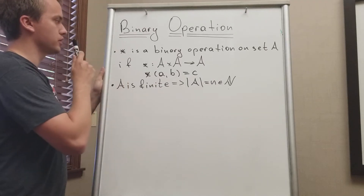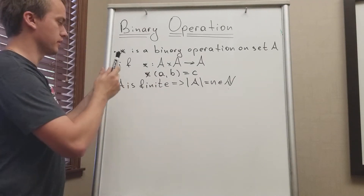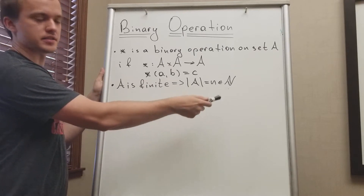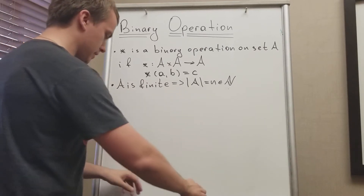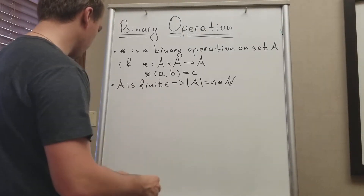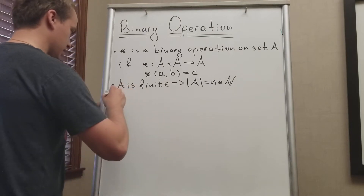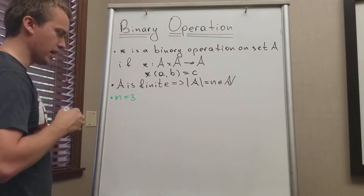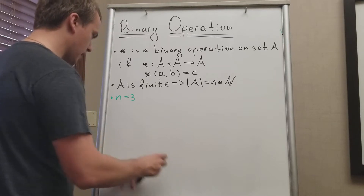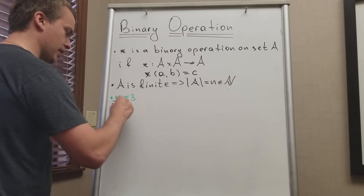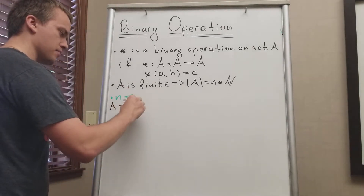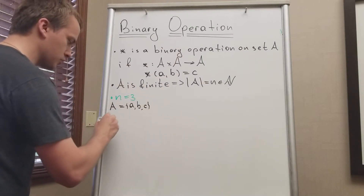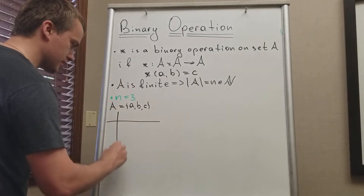Hello guys. In this video I want to continue discussing the number of binary operations for finite sets, and let's think about binary operations in the case when n equals to 3. When n equals to 3, I know that in my set I'm going to have three elements: a, b, and c. And we know that we can define a binary operation in this table.